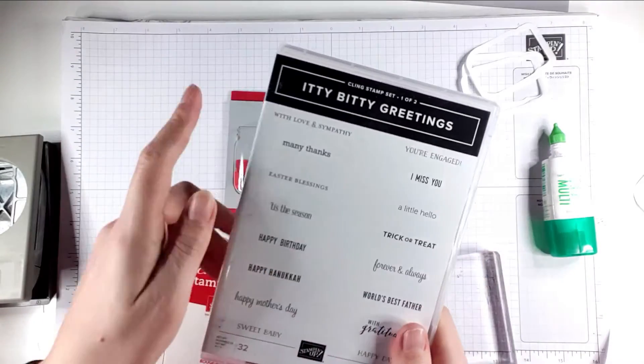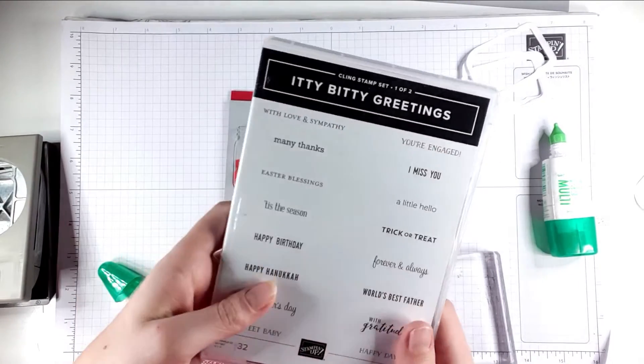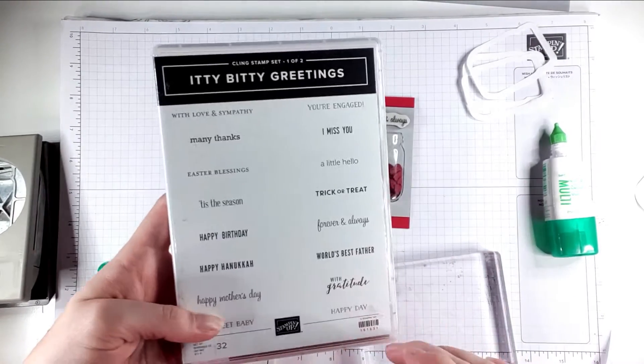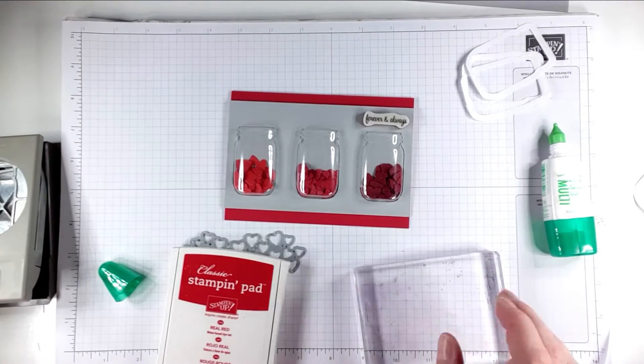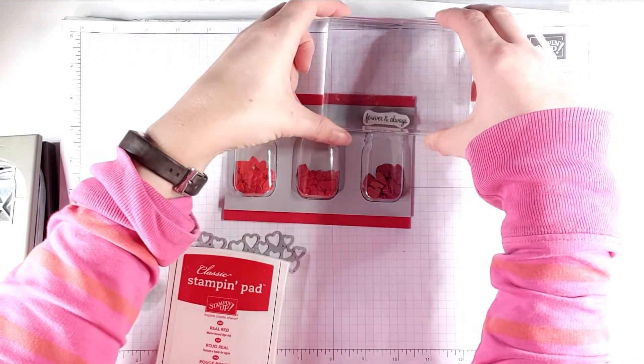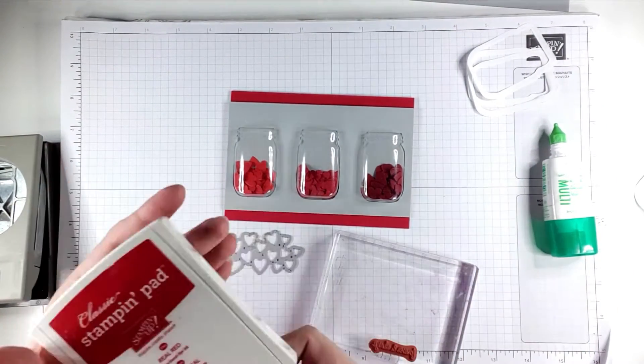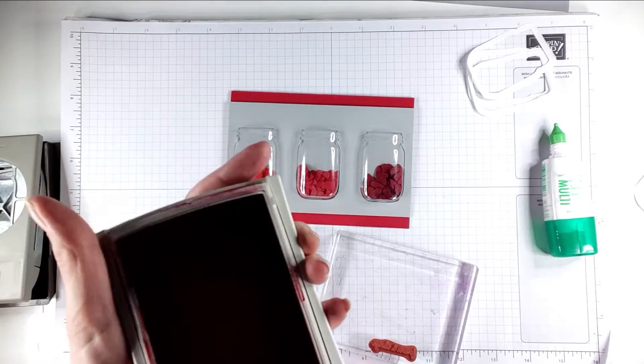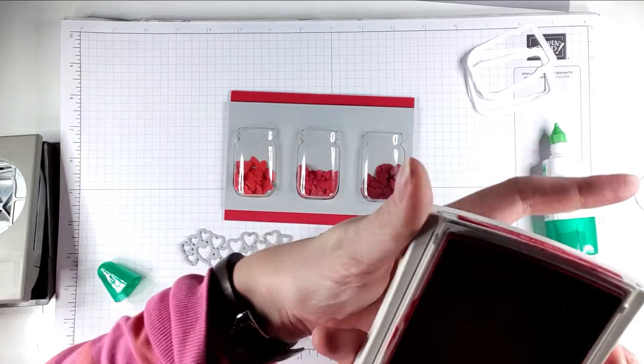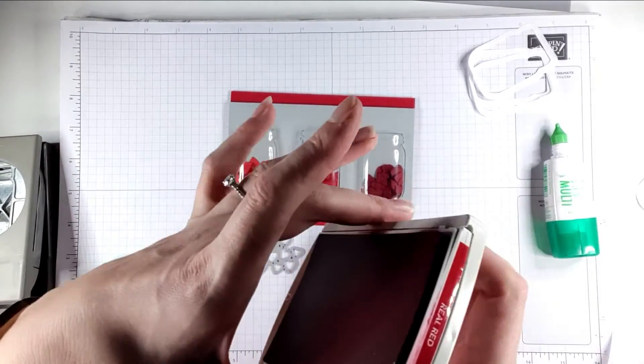I've got the Forever and Always stamp out of this Itty Bitty Greeting stamp set. This is actually a two part stamp set, so this is half of the set. I'm not going to lie, I think I definitely should have done this before I put the diamonds in, and it would have been a lot easier then. So if you're watching this back, I would do the stamping before you put the diamonds in.